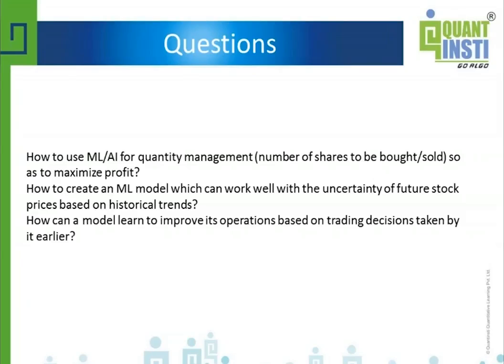The covariance approach, however, often doesn't perform particularly well, because you frequently need to take the inverse of the covariance matrix and there are often many singularities involved, causing significant sensitivity problems. Machine learning can help address this.